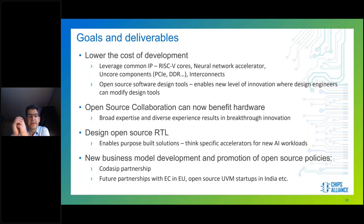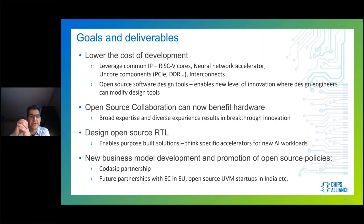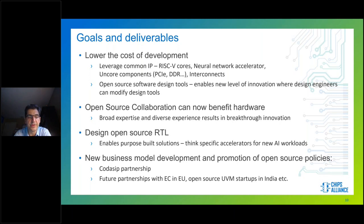How does Chips Alliance help? The key goals are to lower the cost of development and leverage common IP. RISC-V cores are an excellent example of common IP required by many companies engaged in various embedded electronics designs. Other components include neural network accelerators, and a variety of ancillary core components needed to build SoCs such as PCIe, DDR, and interconnects. Overarching all of this are open source software design tools — an area where Chips Alliance is focusing a lot of effort.